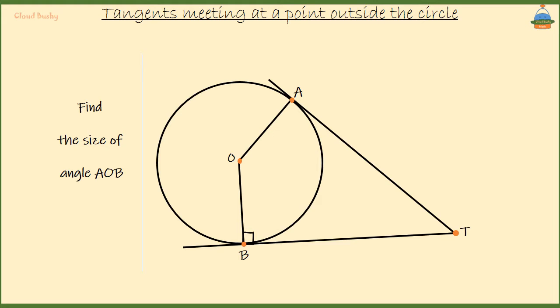So is the angle OAT. This is because the angle between a tangent and a radius is always a right angle.